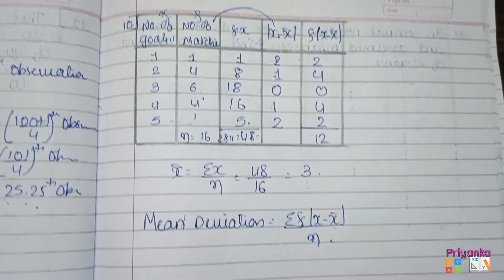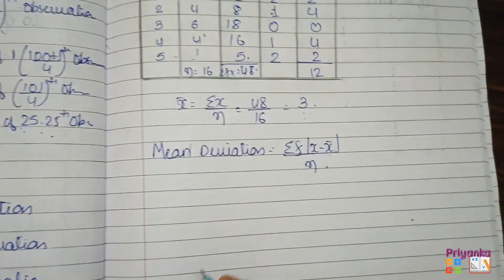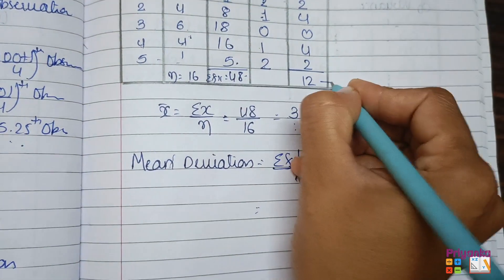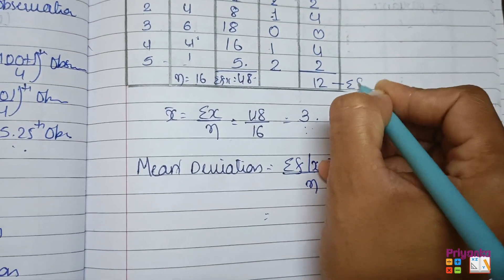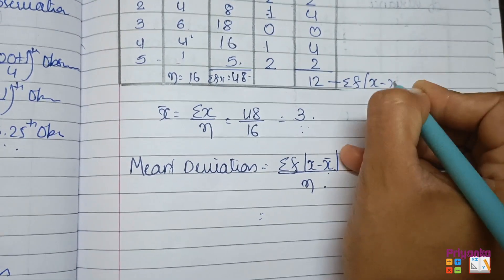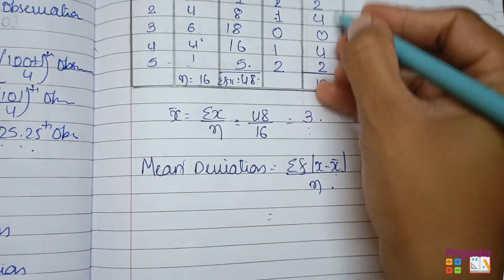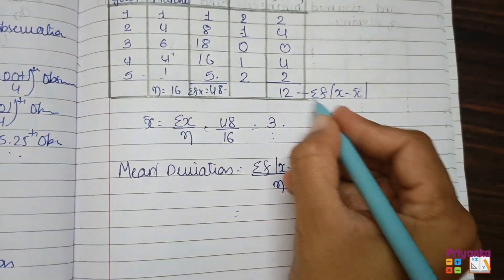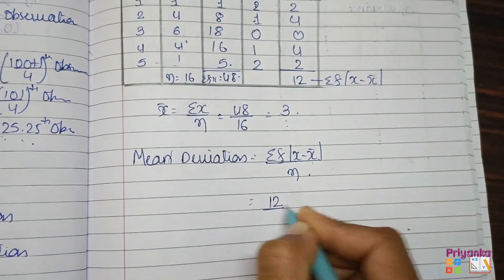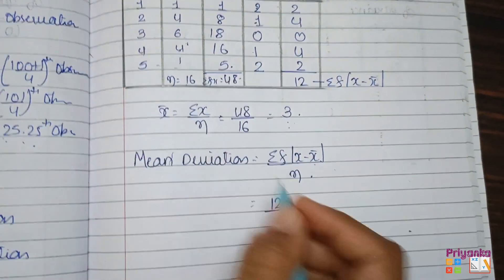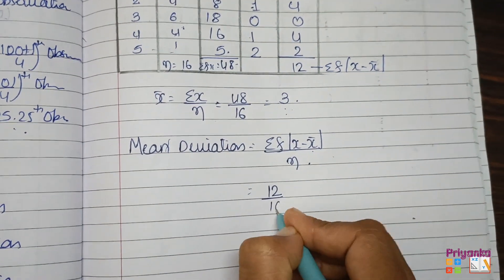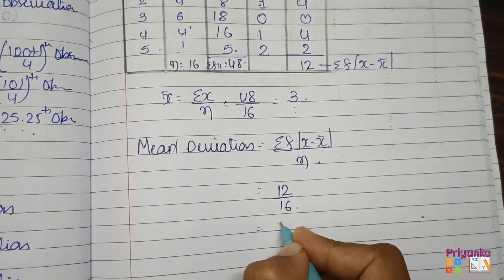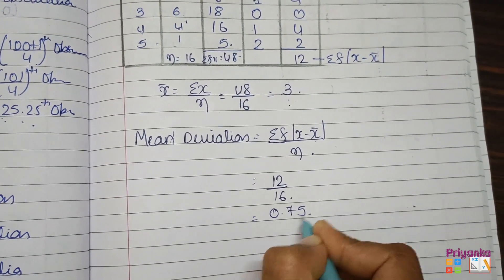The total of the f|x minus x-bar| column is 12. Using the formula: sigma f|x minus x-bar| divided by n equals 12 divided by 16, giving the answer 0.75.